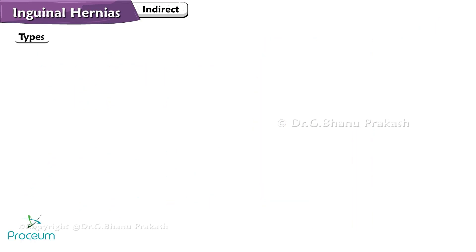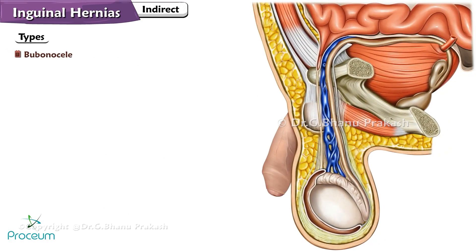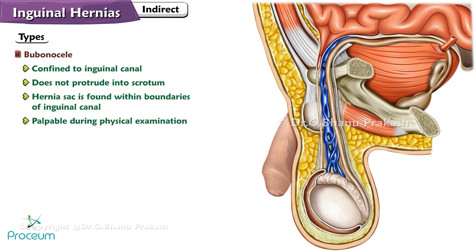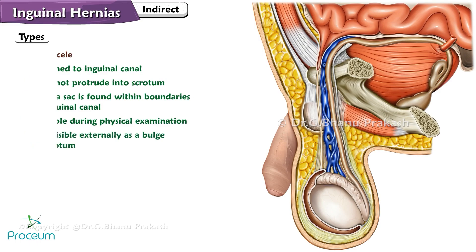Types of Indirect Inguinal Hernia. Bubonocele Indirect Inguinal Hernia: This type of hernia is confined to the inguinal canal and does not protrude into the scrotum. The hernia sac is found within the boundaries of the inguinal canal, making it palpable during a physical examination, but it is not visible externally as a bulge in the scrotum.